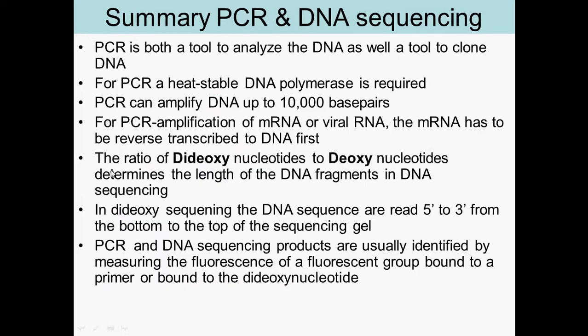In summary, PCR is both a tool to analyze DNA and a tool to clone DNA — you can multiply DNA and analyze it, such as by sequencing it. You need a heat-stable DNA polymerase, and you can amplify fragments of 20 to 10,000 base pairs. If you want to amplify mRNA, you first have to convert it into cDNA using reverse transcriptase, and then you can run that cDNA through PCR to amplify it.